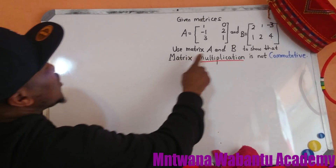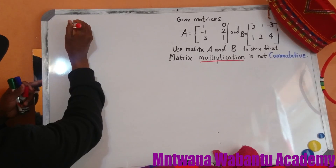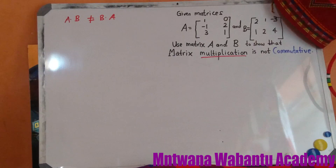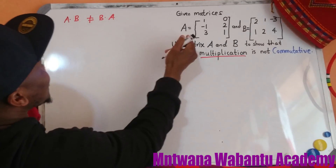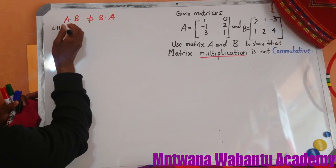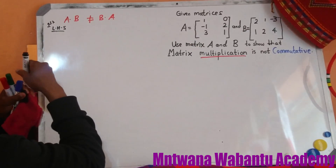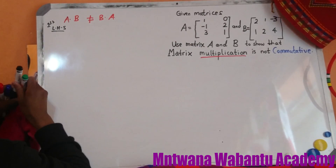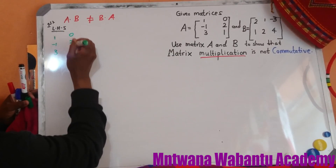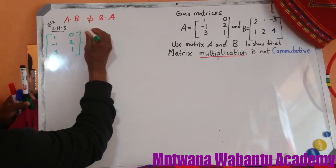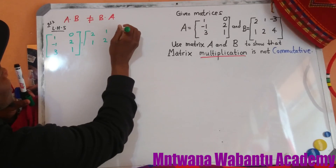So what do they want us to show? They say use matrix A and B to show that matrix multiplication is not commutative. So we'll take matrix A times B. Let's start with the left-hand side, so A times B. What is A? A times B means 1, negative 1, 3 times 0, 2 and 1 — all these times by 2, 1, 1, 2, negative 3 and 4.